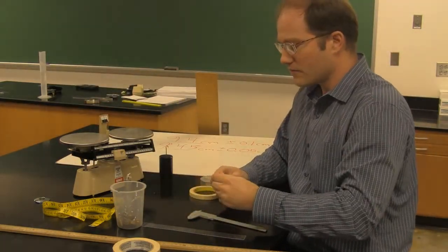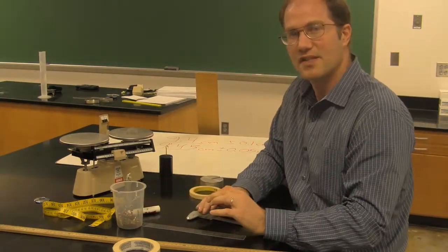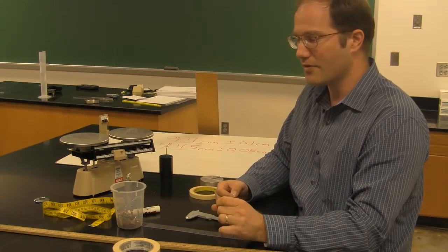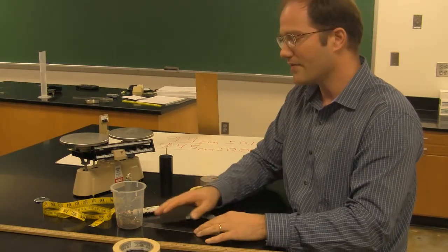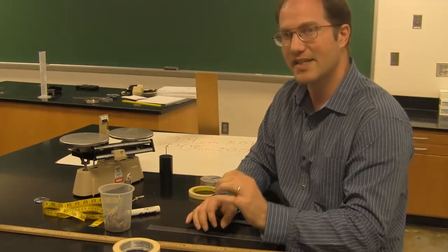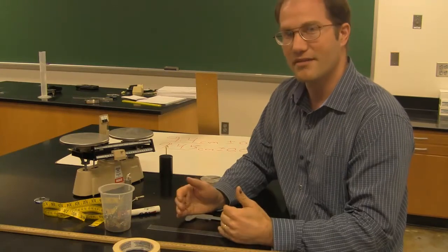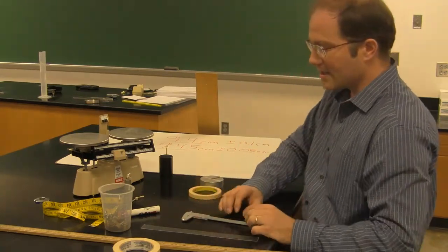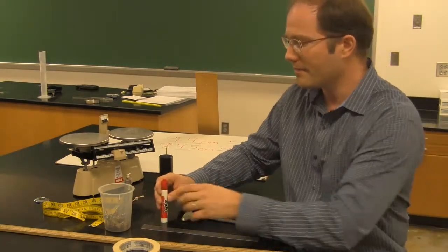When we're doing calculations that involve significant figures, those significant figures, if they're coming from data points that you measure, that measured uncertainty is what controls how many significant figures are in your data. And then that propagates throughout your calculations. Let's take a look at a couple of more measuring devices.